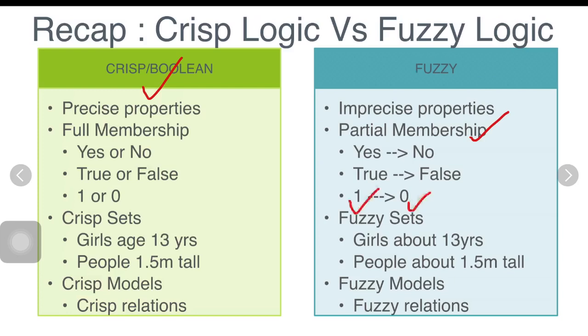Another example is instead of just black and white in crisp sets, fuzzy employs the spectrum of colors, accepting that things can be partly true and partly false at the same time.